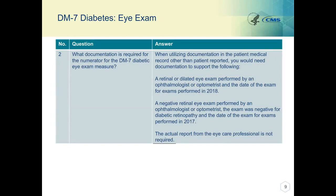Question two is regarding the DM7 measure: what documentation is required for the numerator for the DM7 diabetic eye exam measure? When utilizing documentation in the patient medical record other than patient-reported, you would need documentation to support a retinal or dilated eye exam performed by an ophthalmologist or optometrist and the date of the exam for exams performed in 2018. For exams performed in 2017, you would need documentation of a negative retinal exam performed by an ophthalmologist or optometrist, that the exam was negative for diabetic retinopathy, and the date of the exam.